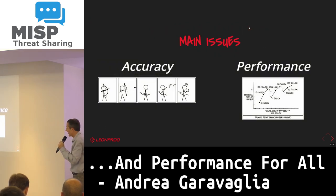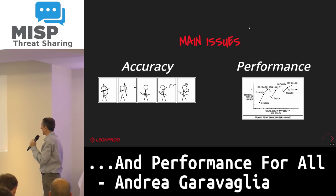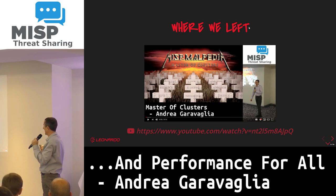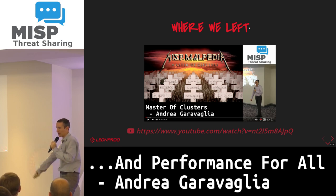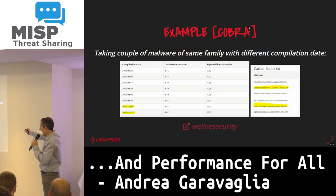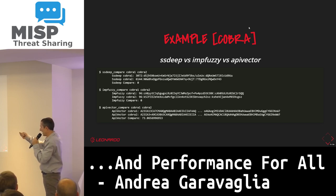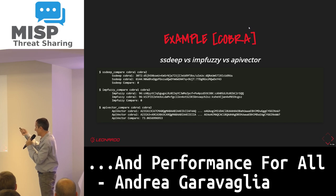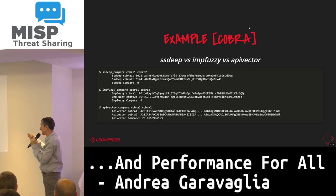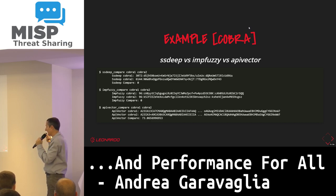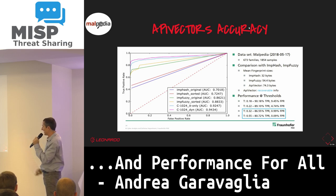The main issues we found last year were accuracy and performance. For accuracy, we solved it last year — this is my presentation from last year, new year new album. I took a couple of samples from the same family, but the attacker changed something in the code and compiled it at different times. Using SSDeep was not working well for comparison. We also tried ImpFuzzy from Chert of Japan — it was not so good. We found ApivecScout last year, from Germany, from the person maintaining the Malpedia repository. We were pretty happy about it. These are the performance results of the method.